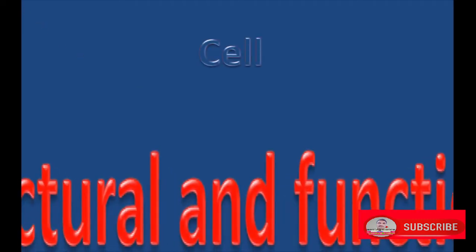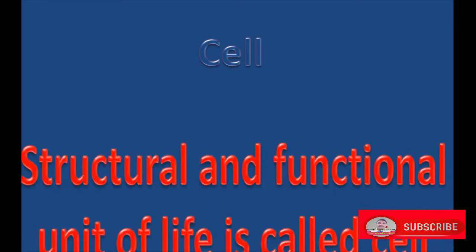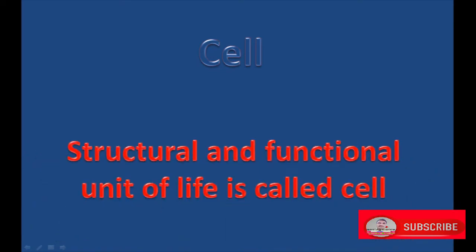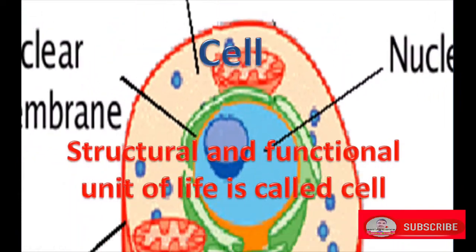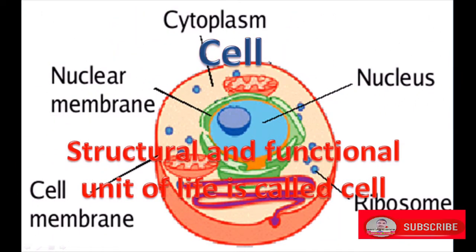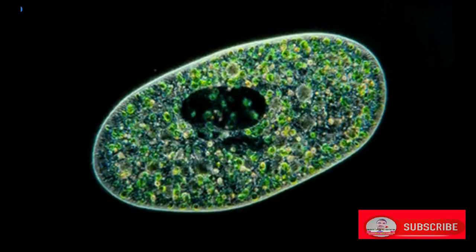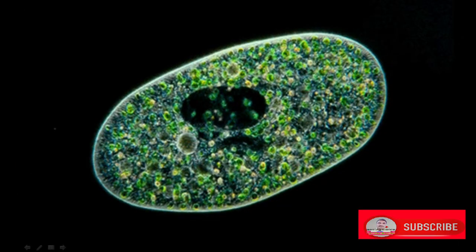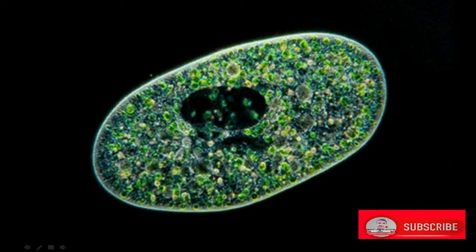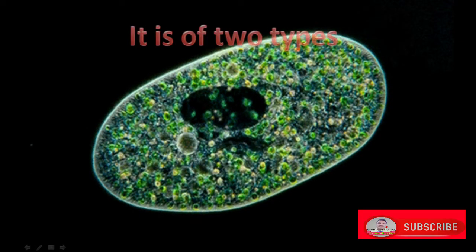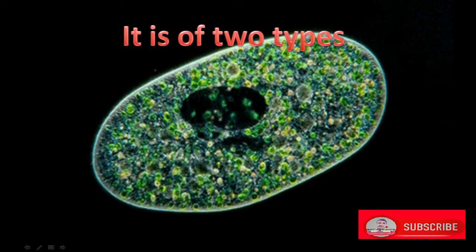The structural and functional unit of life is called a cell. The cell is made of various organelles and it is of two types.